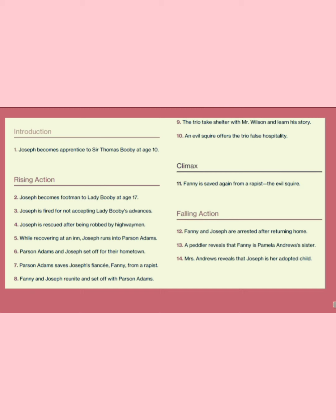Joseph and Parson Adams set off together, and the trio takes shelter with Mr. Wilson and learns his story. Fanny is saved again from the rapist — the evil squire. So the climax: the plot is essentially the journey of Mr. Joseph Andrews to meet Miss Fanny. Most people believe the climax is Fanny being saved again from the rapist, though it is debated.